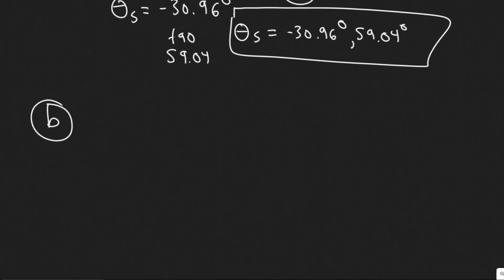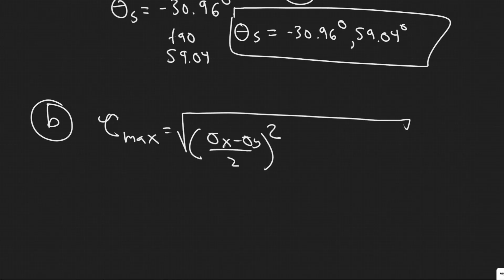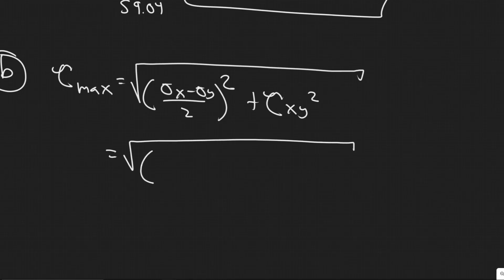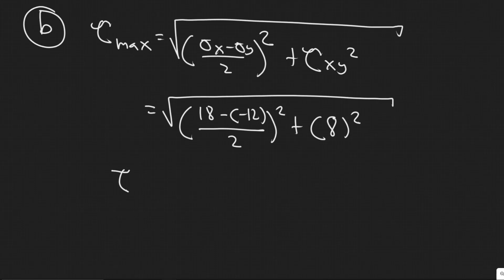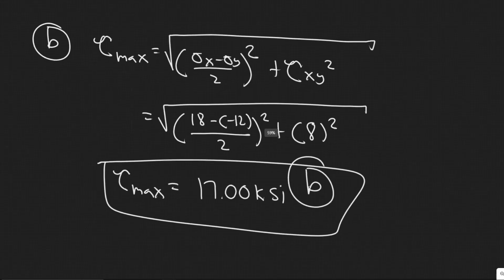Now let's move on to B. They want us to find maximum in-plane shearing stress. For this, you're just using this formula. Tau max is equal to square root of sigma x minus sigma y divided by 2 squared plus tau xy squared. It's just a matter of plugging it in, relatively simple. So this is 18 minus minus 12, divide by 2, square it, plus 8 squared. Go ahead and plug this in your calculator. You'll get tau max, where your max shearing is 17 ksi. This is your answer to B.